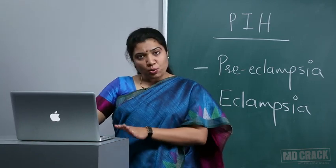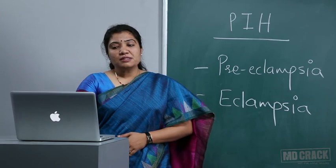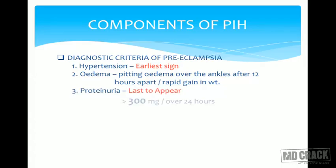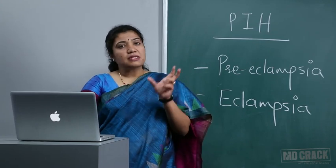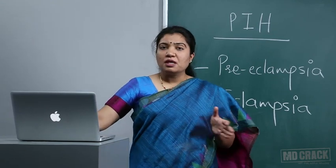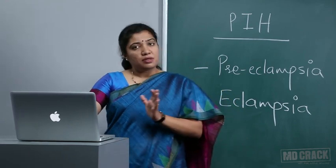The patient must be previously normotensive, now beyond 20 weeks of pregnancy. Other components include pitting edema over the ankles after 12 hours or rapid weight gain. In pregnancy, we see both physiological and pathological edema. Physiological edema occurs because the gravid uterus reduces venous return throughout the day, so edema appears on the lower limbs by end of day but decreases with rest overnight.